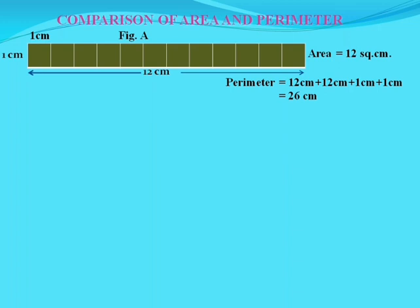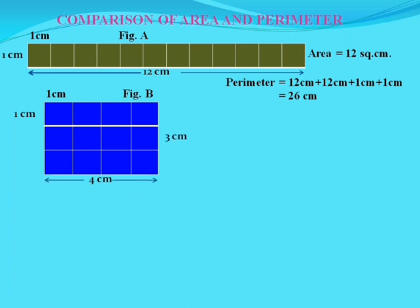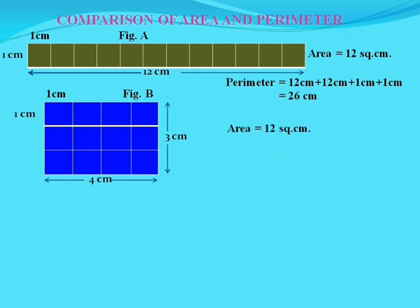Now these 12 squares are arranged in a different way. Each square is of side 1 cm, the length of the rectangle is 4 cm, and the breadth is 3 cm. Calculate the area of this rectangle: the area is 12 square cm. Now perimeter — the perimeter is the sum of all the sides: 4 cm plus 4 cm plus 3 cm plus 3 cm, which becomes 14 cm.